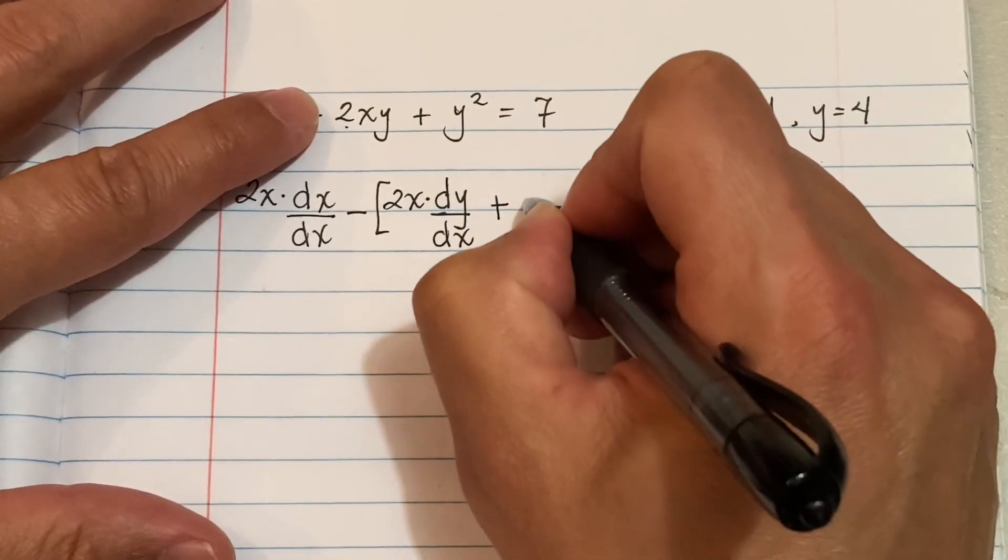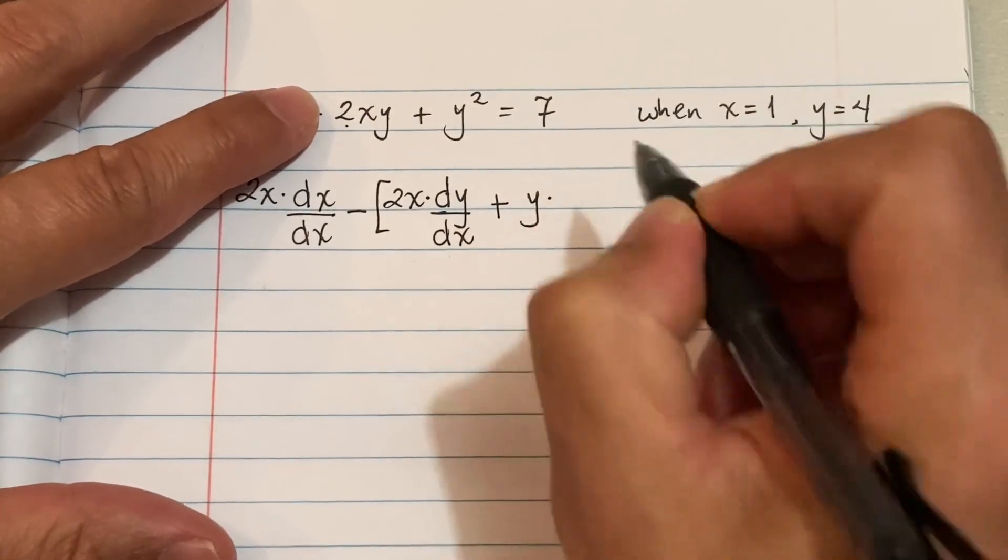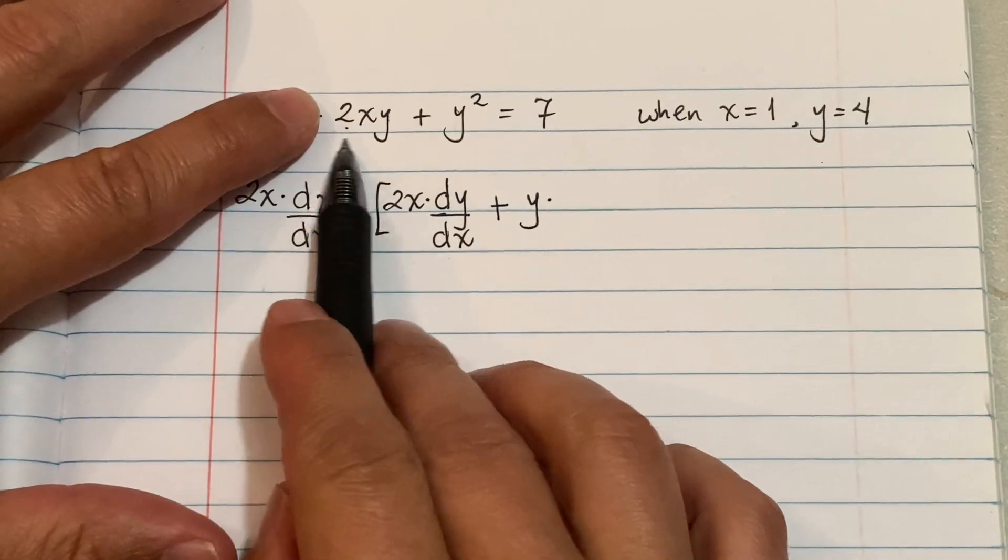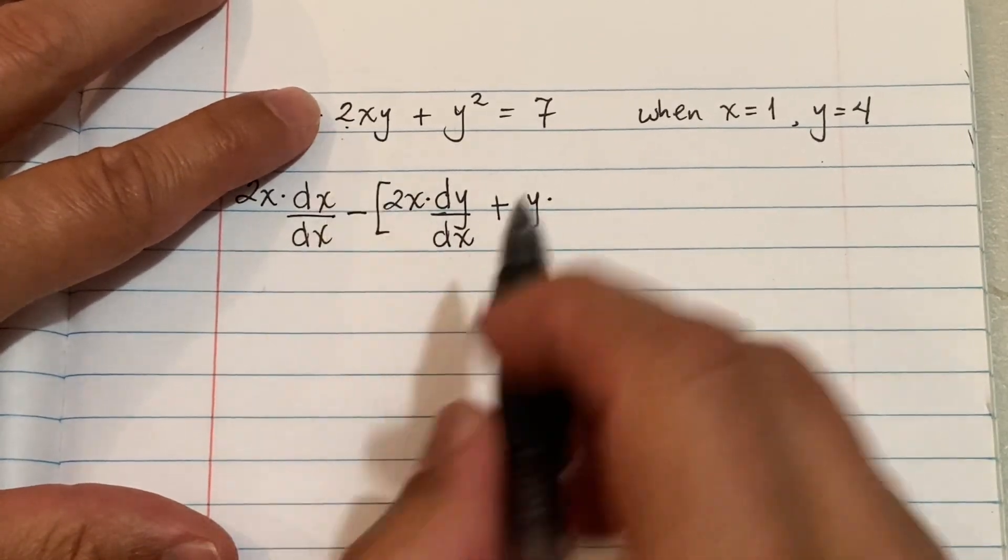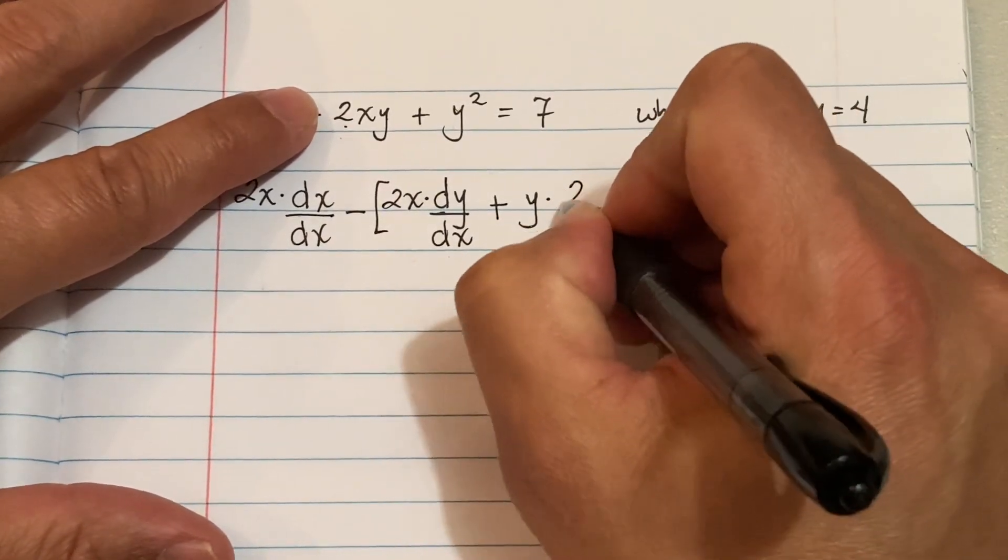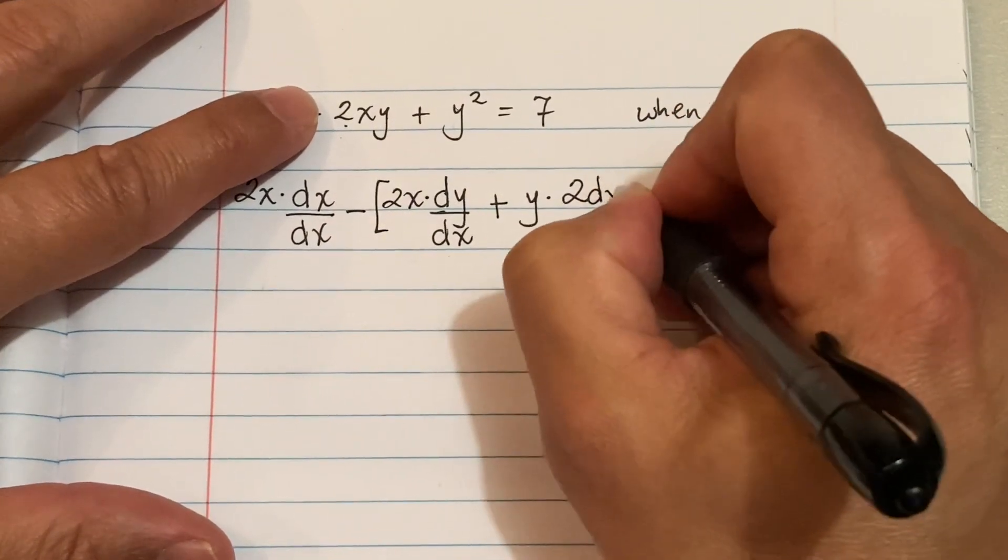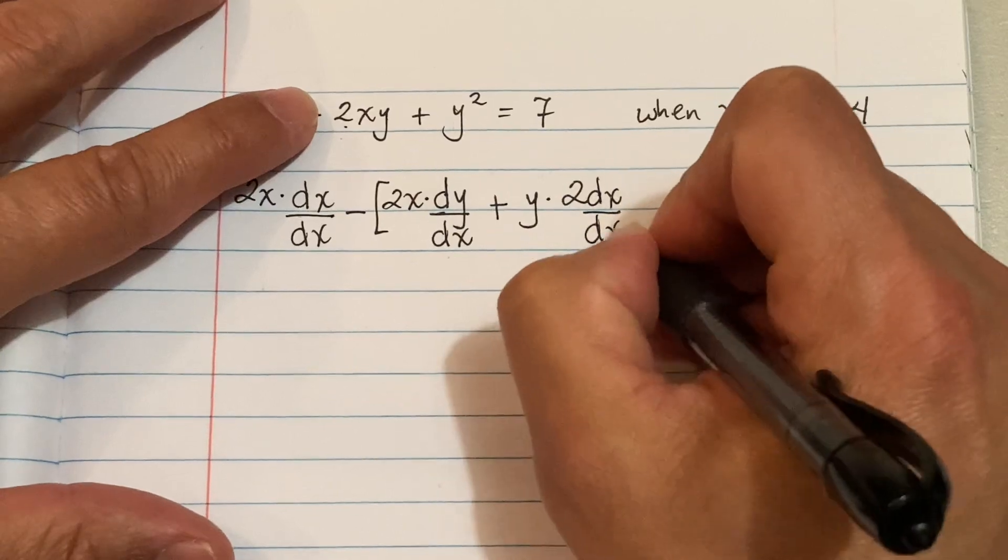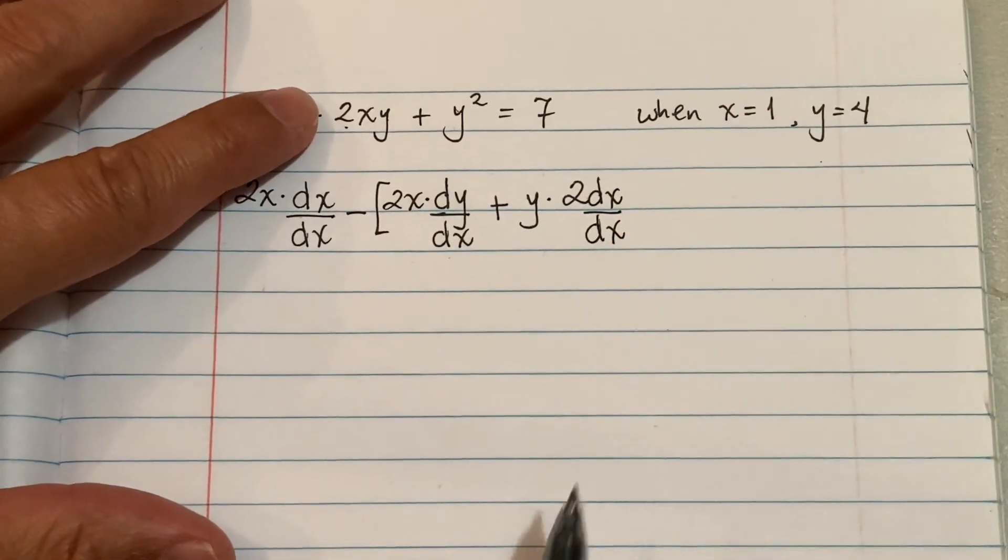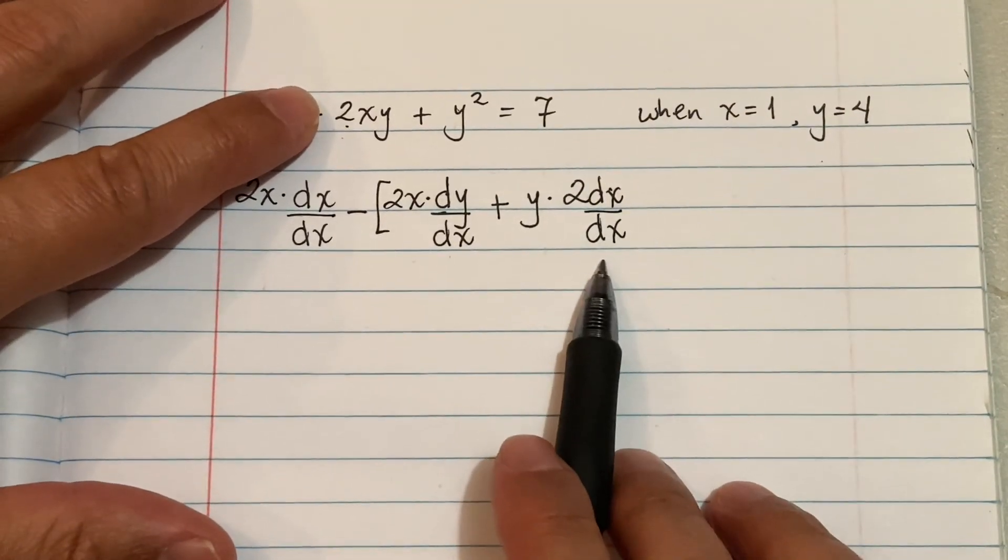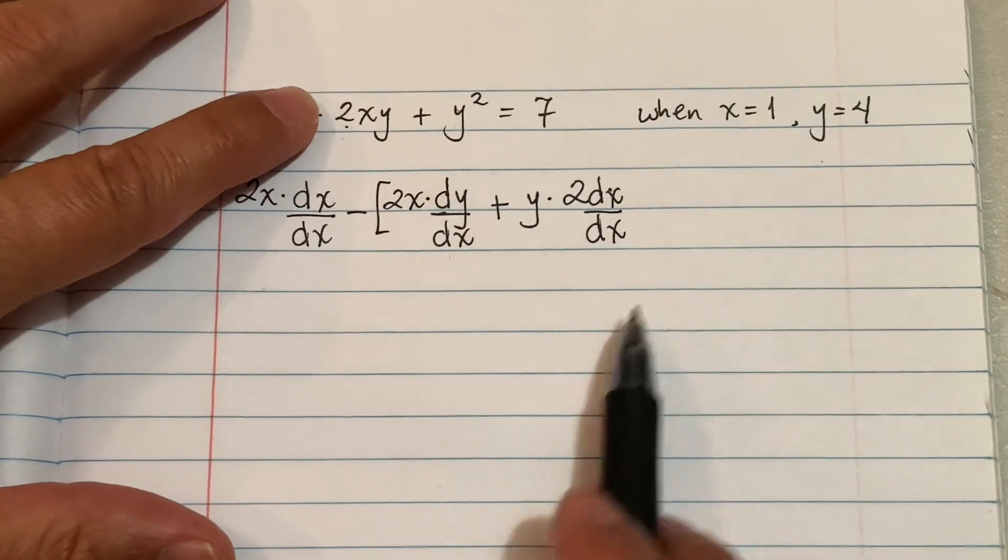...which is Y times the derivative of the first, so the derivative of 2X is 2, but because it's an X we're gonna write the derivative of X with respect to X. And that's why this becomes a 1. Usually your teacher will tell you, 'Hey, if it's just X don't worry about it,' but it's important to know why it becomes a 1.